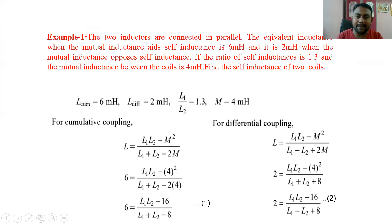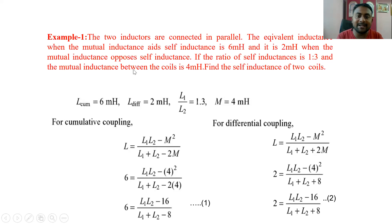The data given is that two inductors are connected in parallel. We are doing a problem on parallel coupling, which means either parallel aiding or parallel opposing. The given data is: when mutual inductance aids with self inductance (parallel aiding), the equivalent is 6 milli Henry; when mutual inductance opposes self inductance (parallel opposing), it is 2 milli Henry. The ratio of self inductances L1 to L2 is 1:3, and the mutual inductance M (that is M12 and M21) is M. The objective is to find the self inductance of the two coils, L1 and L2.